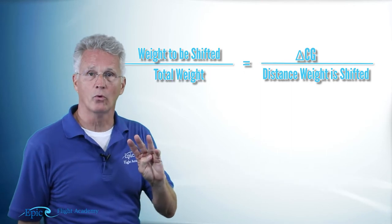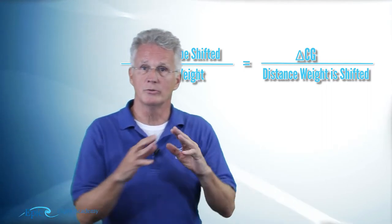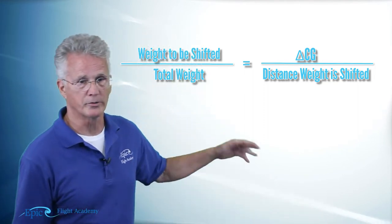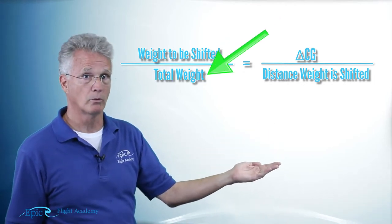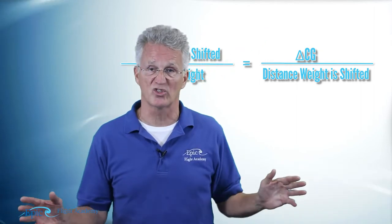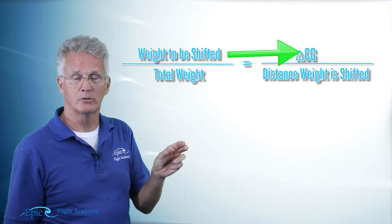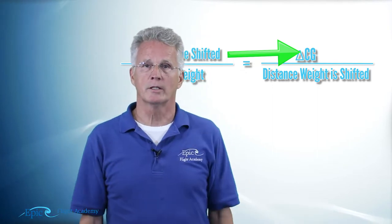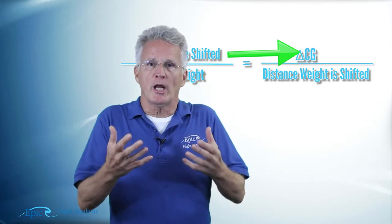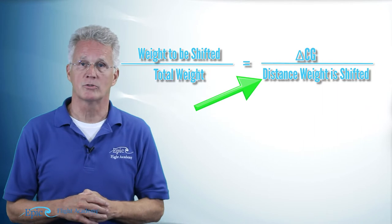Notice this formula has four simple parts. To make the formula work, I'm going to get three out of four and do some very simple math. The weight to be shifted is over the top of the total weight of the airplane — that's not the total gross weight necessarily, it's the total weight for this flight. That is equal to delta CG — that little triangle means the change in the center of gravity. That means change when we're doing mathematics. So this means the change in the CG over the distance that the weight is to be shifted.